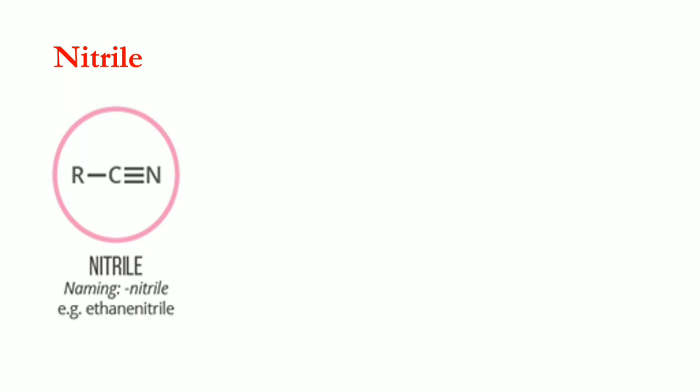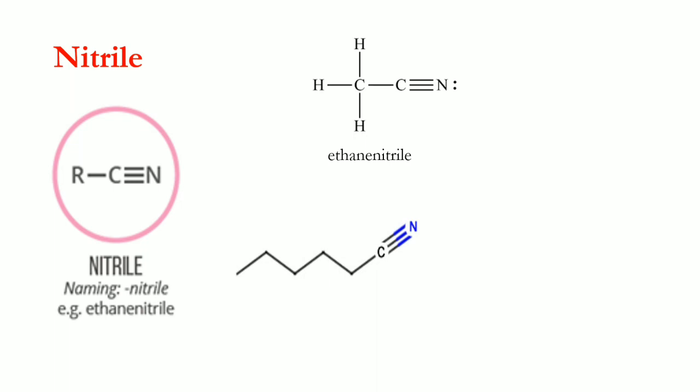Nitriles are characterized by the cyanide or nitrile group: C triple bond N. We use 'nitrile' as a suffix for IUPAC names. A two-carbon chain gives ethanenitrile. A six-carbon chain gives hexanenitrile. A four-carbon chain gives butanenitrile.